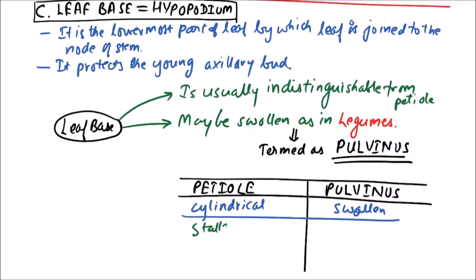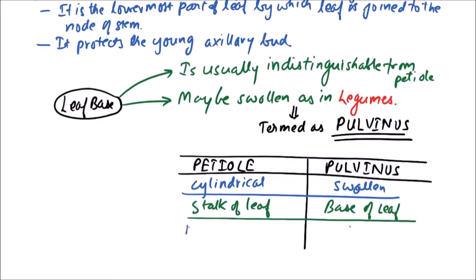Petiole is the stalk of the leaf while pulvinus is the base of the leaf. Petiole lifts the leaf blade above the stem so that it can get good exposure of light, while the pulvinus helps in sleep and shock movements.